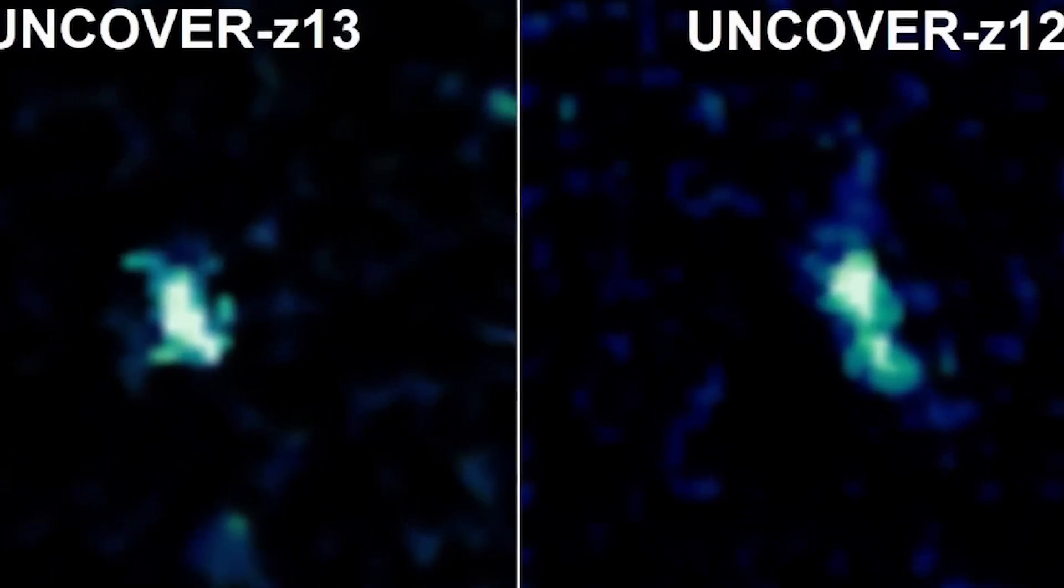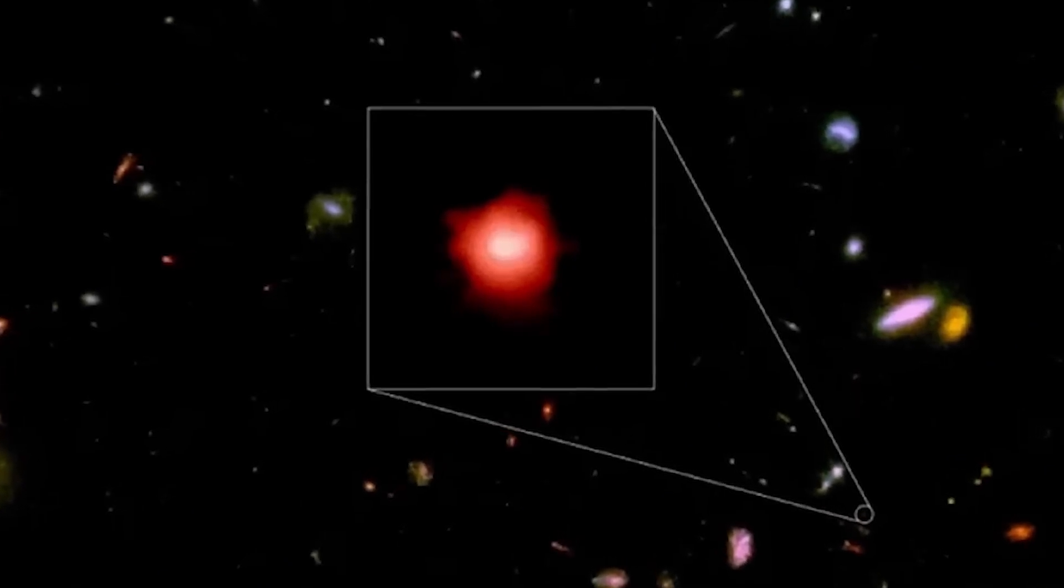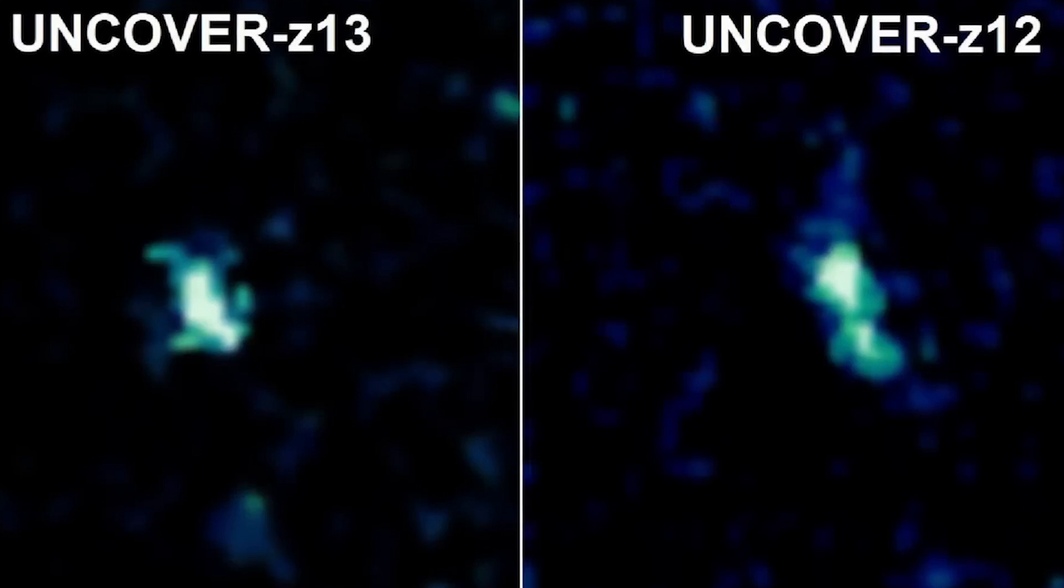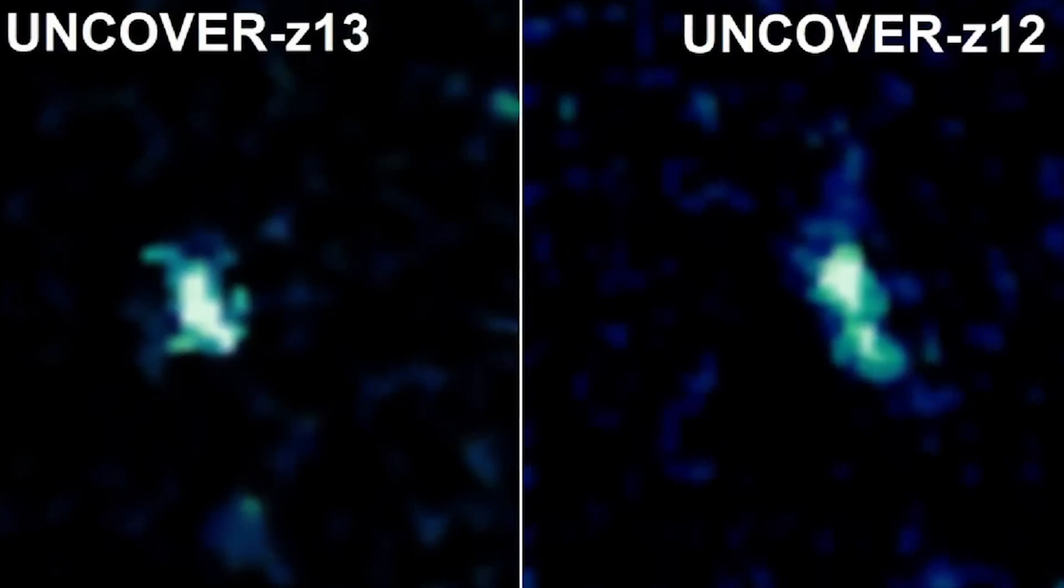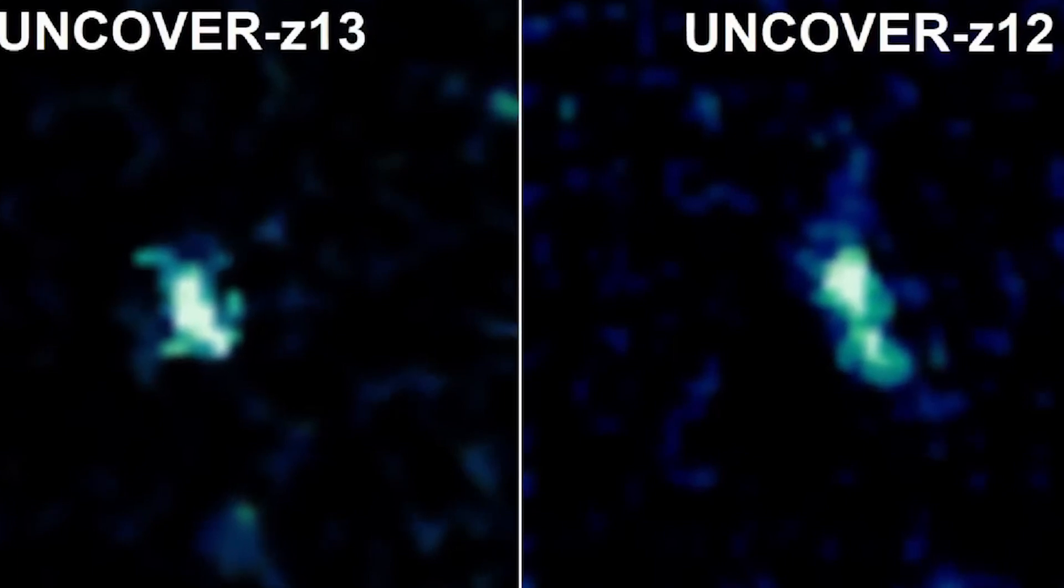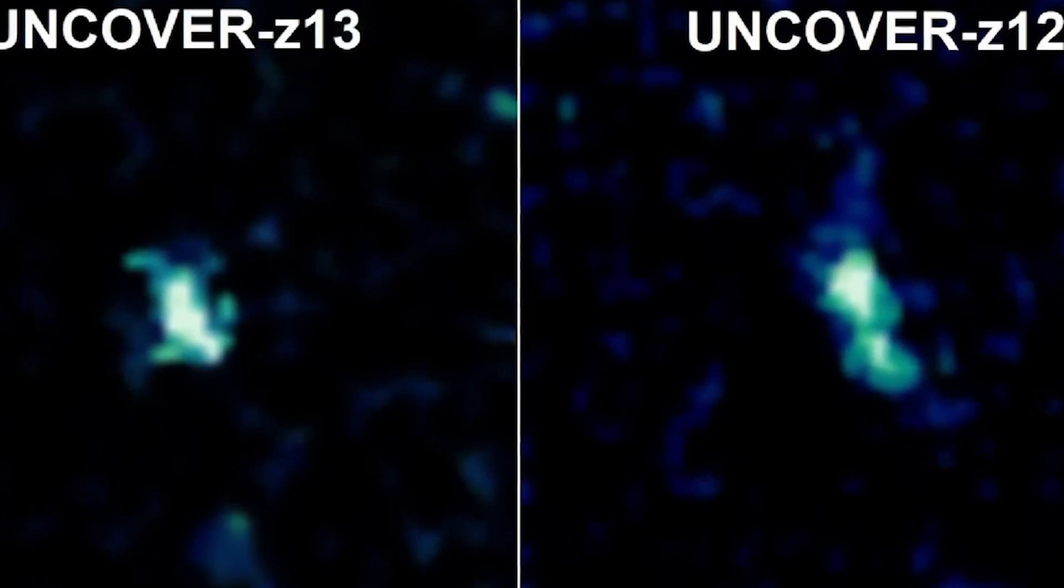Previously, galaxies discovered at these vast distances typically appeared as dots in images, but the latest observations have unveiled distinctive characteristics. One of these galaxies, Uncover Z 12, displays an elongated shape resembling a peanut, while the other exhibits a fluffy ball-like appearance.